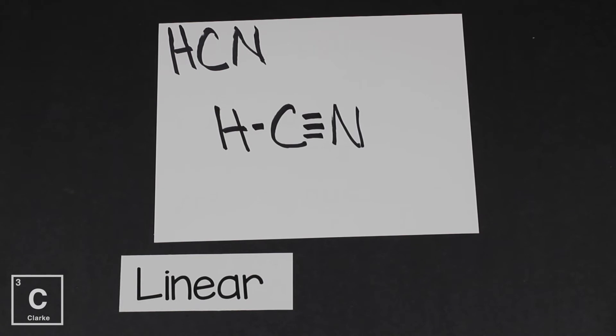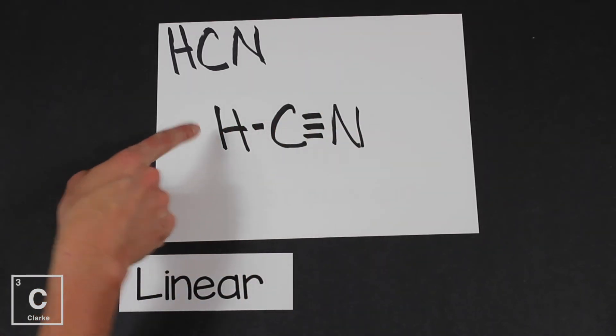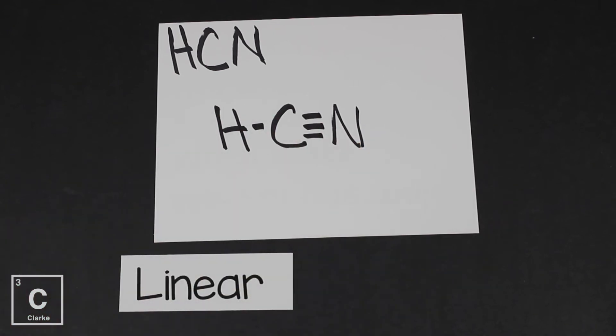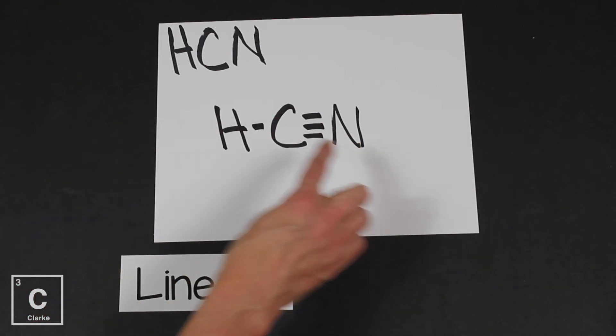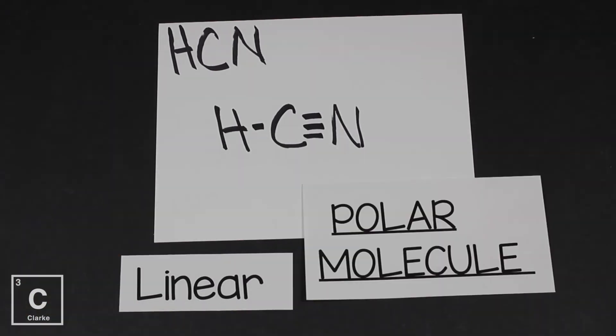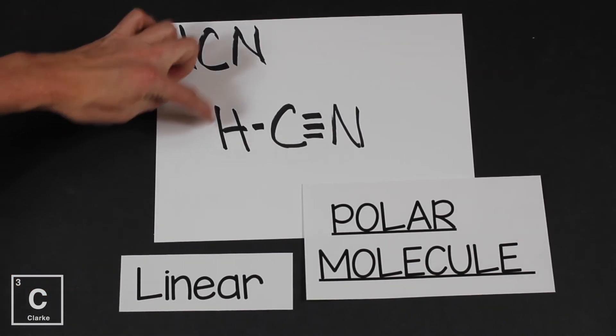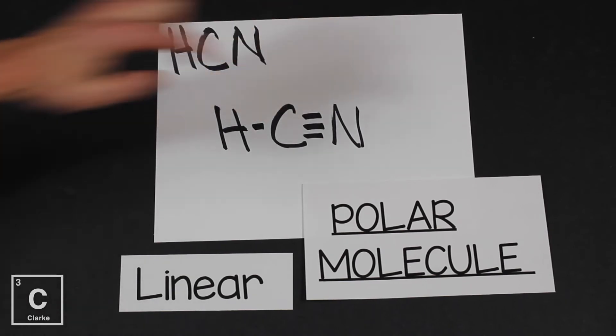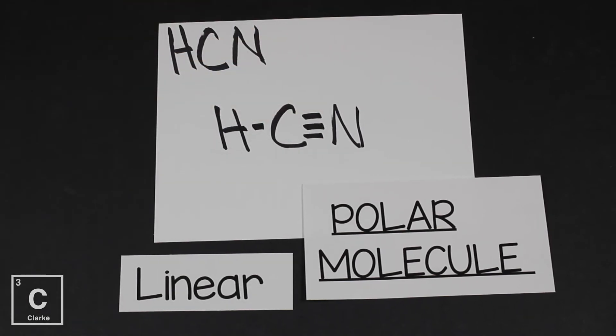Now remember, linear was a symmetrical shape and symmetrical shapes normally mean non-polar. But in this instance we've got different atoms. One is non-polar, one is polar. So basically that's like saying someone very strong, someone very weak. You got it. Someone's going to win tug of war. Nitrogen's going to win tug of war, and if someone wins tug of war, polar molecule. Linear molecules aren't often polar, but if you've got two different atoms bonded to that central atom there, then you could very well get a polar molecule.